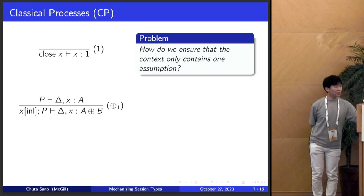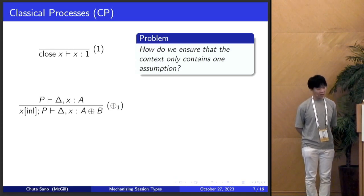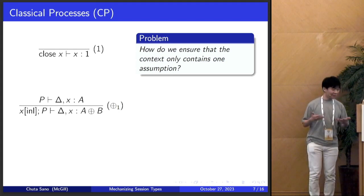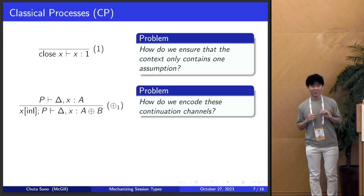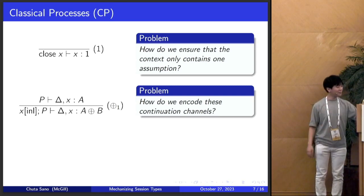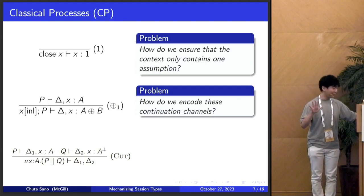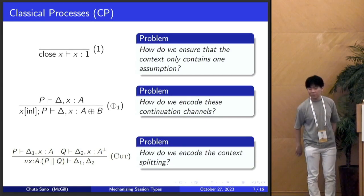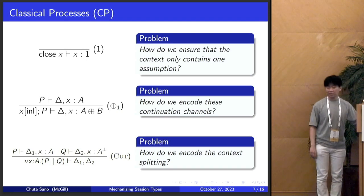Here's one of the typing rules for plus: the process sends an in-left signal across channel x, continues as p, and the type of x changes to a — a concept known as continuation channels. In the context of context management, how do we handle these mutations of types? We also have the parallel composition rule, which is really about context splitting or context merging if viewed top-down. How do we deal with this context split in the context of mechanization?